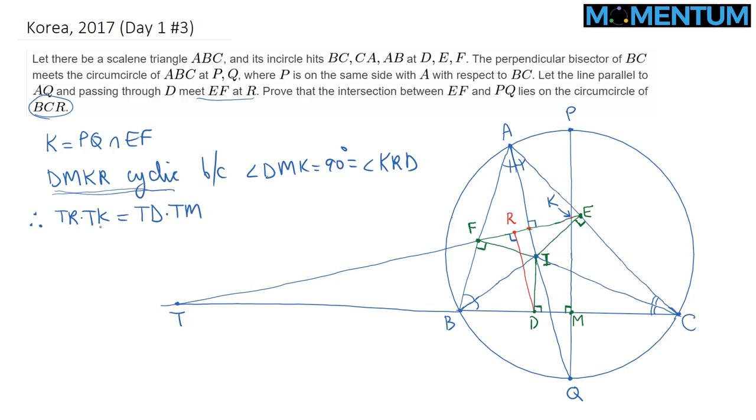Sorry, I meant to say TB times TC. So equivalently, the question is asking for TR times TK by power of a point is equal to TB times TC, but because TR times TK equals TD times TM which we just proved, this gives us the idea that instead I will be showing that TB times TC equals TD times TM. If I can show that, then I would be done.